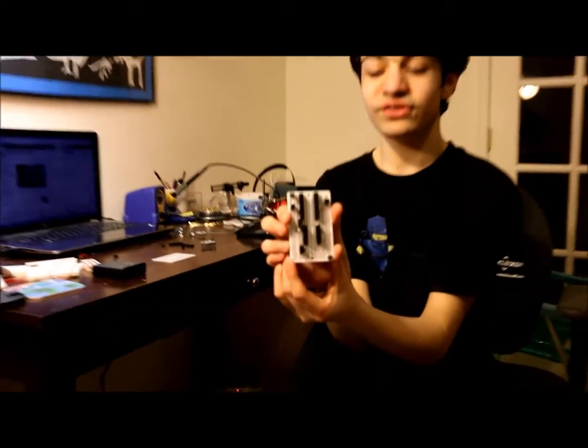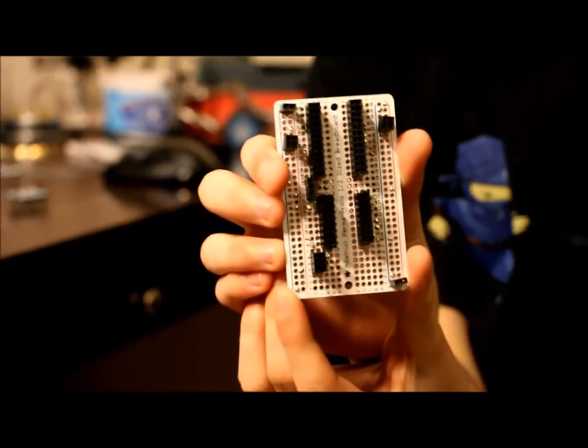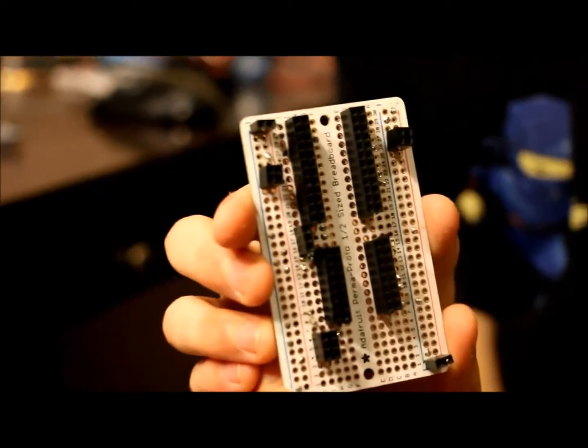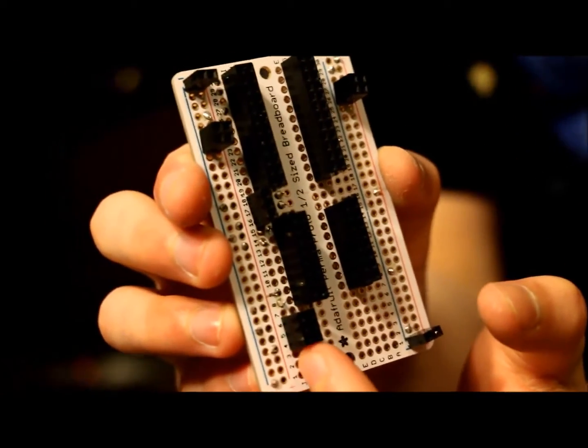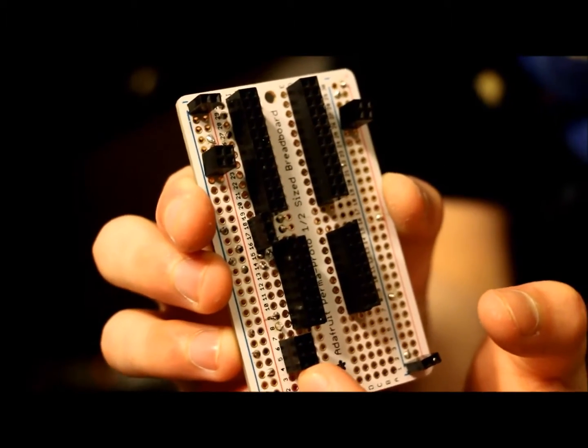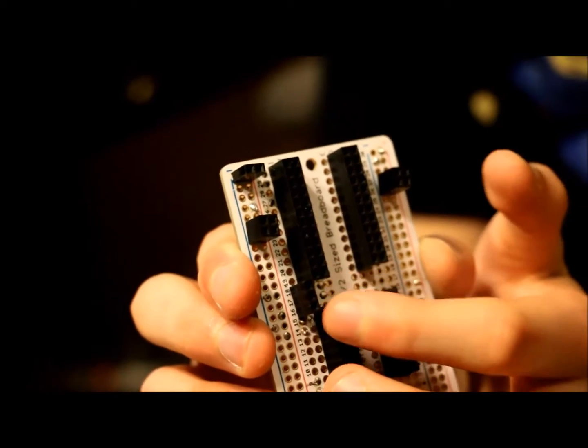Soldering the female headers on the Permaproto is probably the most tedious part, so don't be very aggravated by this. After you finish soldering the female headers on, this should be your overall product. And another note, sorry about the 2x3 female headers, this is where your sensor would go. This is where your NeoPixel would go.